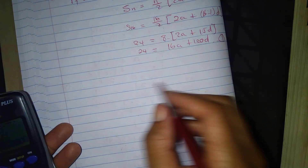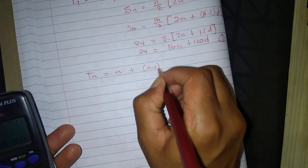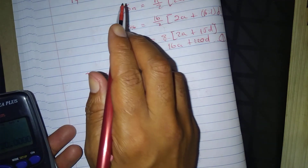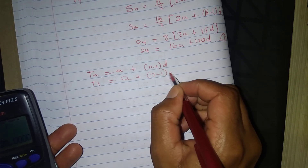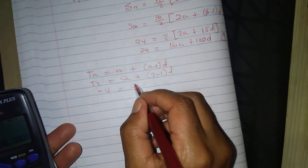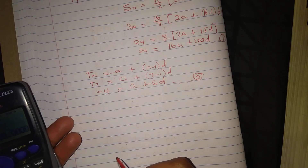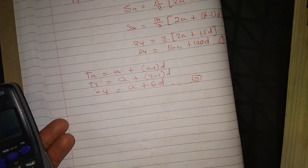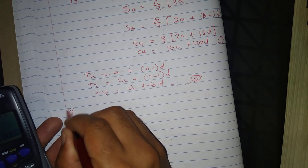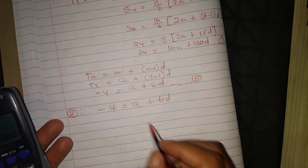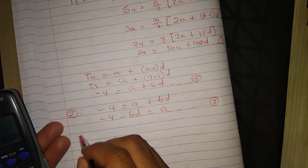Now for equation 2, using the term formula for an arithmetic sequence: T7 = A + (7-1)D = A + 6D. T7 = -4, so: -4 = A + 6D. This is equation 2. Making A the subject: A = -4 - 6D. This is equation 3.